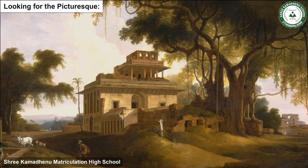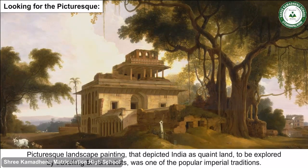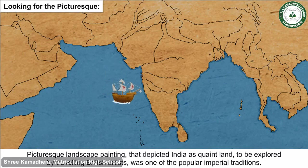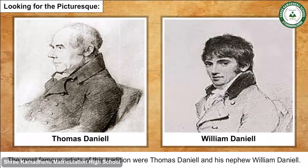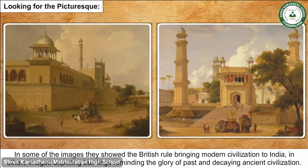Picturesque landscape painting, which depicted India as a quaint land to be explored by travelling British artists, was one of the popular imperial traditions. The most famous artists of this tradition were Thomas Daniel and his nephew William Daniel. In some images they showed British rule bringing modern civilization to India; in others, images depicted buildings reminding viewers of the glory of the past and a decaying ancient civilization.